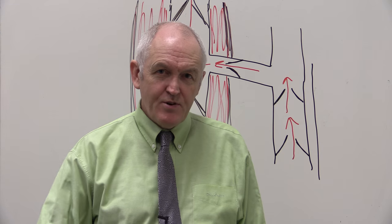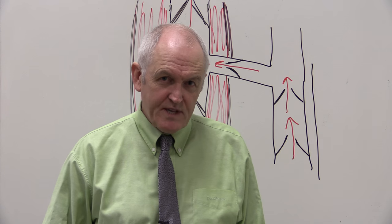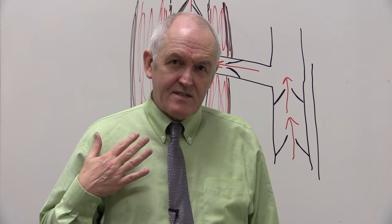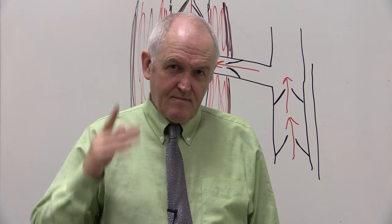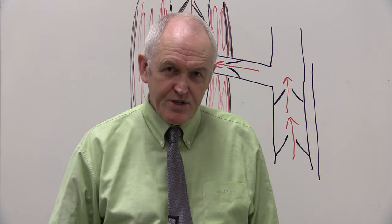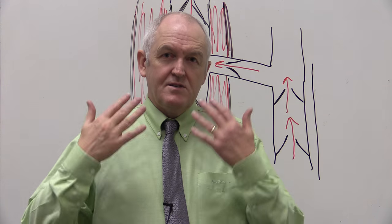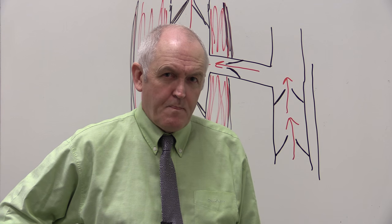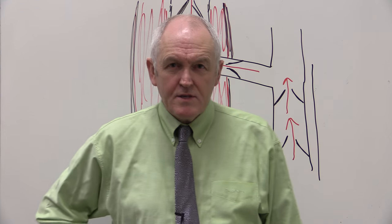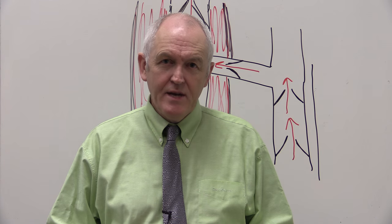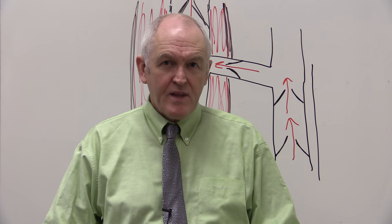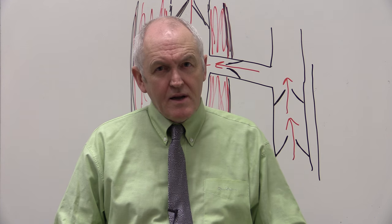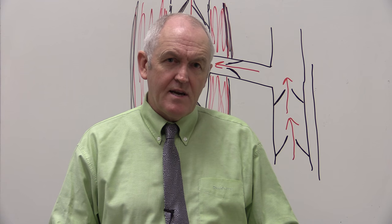So the increased pressure in the abdomen is pushing, and the reduced pressure in the thorax is sucking — that's going to increase venous return. And then when I breathe out, the diaphragm is going to go up, reducing the pressure in the abdomen, making it easier for blood to come from the legs up into the large abdominal vena cava.